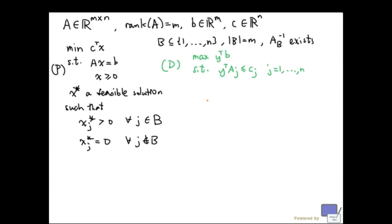And the complementary slackness conditions will require such y star to satisfy the following inequalities with equality. So let me just write this down. x star is optimal if and only if there exists y star feasible to d such that y star transpose AB equals C sub B transpose. And since the inverse of A sub B exists, y star is uniquely determined.